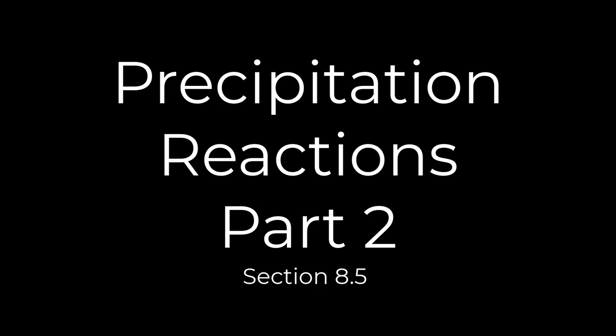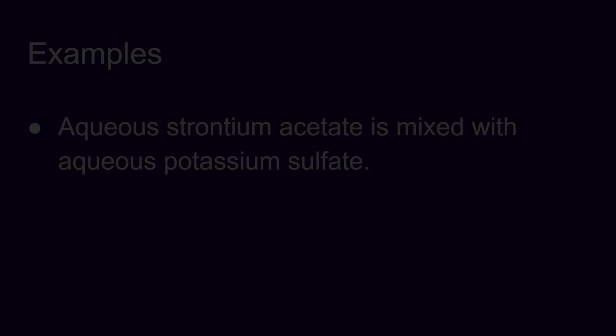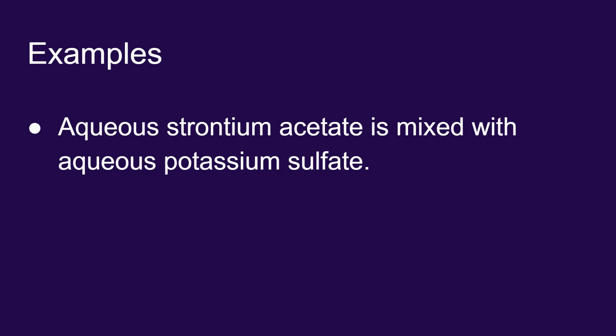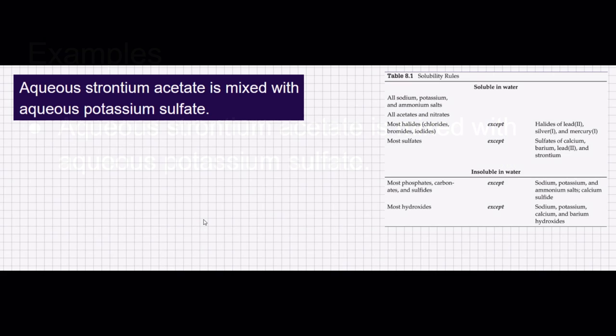The first example of a precipitation reaction I want to look at is predicting what happens when I mix an aqueous solution of strontium acetate with an aqueous solution of potassium sulfate. I want to write a molecular equation, a complete ionic equation, and a net ionic equation. So let's get started.